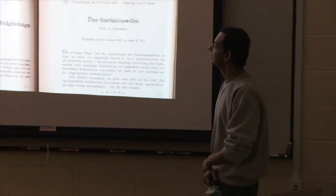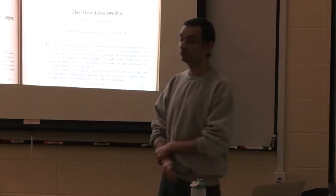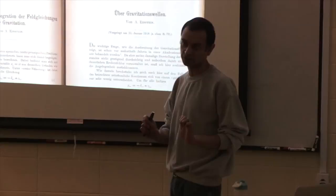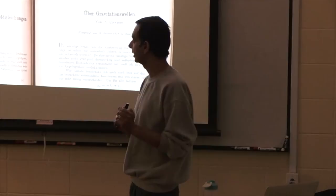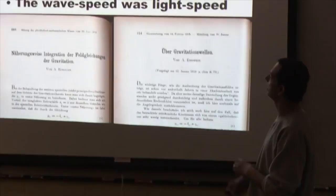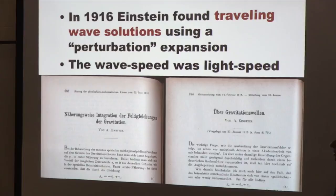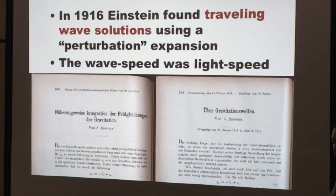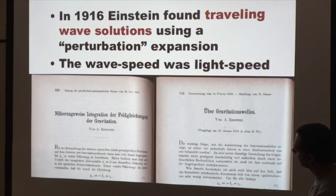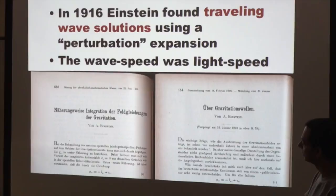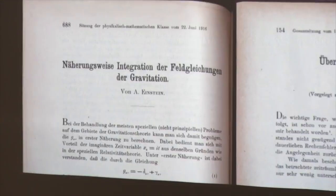A few months after 1915, Einstein started looking at solutions to his equation. In 1916, he found that with a perturbative expansion, there were wave-like solutions in the theory, and these waves travel at the speed of light. Here are the first two papers published on gravitational waves by Einstein — 1916 and 1918 — where the term 'gravitational wave' begins to be used.